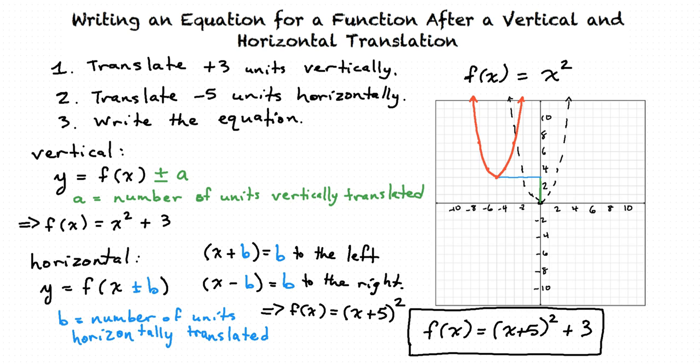So when writing the equation for the translation of the graph, the number added or subtracted to the overall function moves the graph up or down and is called the vertical translation, and the number added or subtracted next to the x in the parentheses moves the graph left or right and is called the horizontal translation. I have to be careful with horizontal translations, because a number added moves the graph to the left and a number subtracted moves the graph to the right. Very good summary. It looks like you're ready for some more examples.